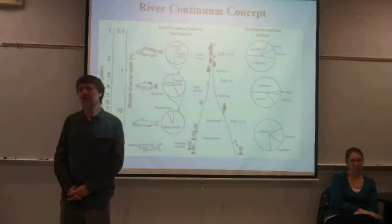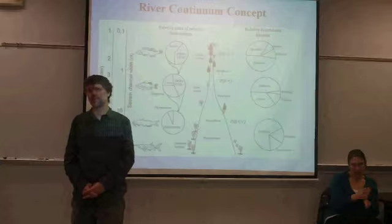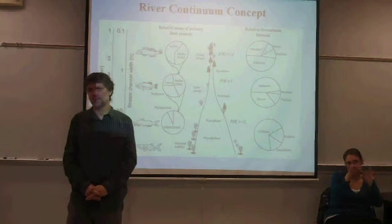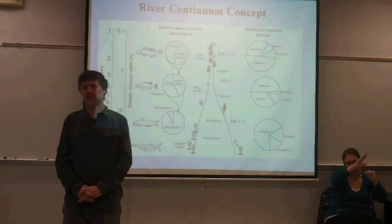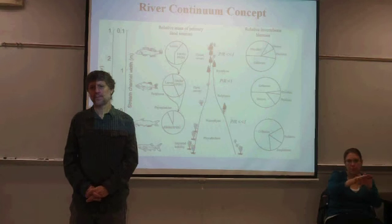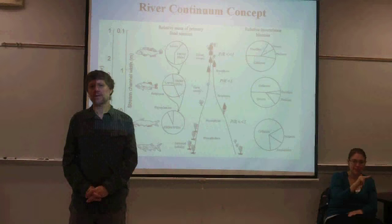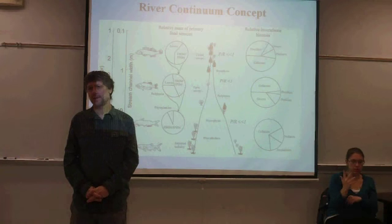Below timberline in the mountains, it would be closed canopy. But what types of trees would dominate? Pine trees — evergreens. So you'd expect them to have less leaf input because they don't lose their leaves every year.